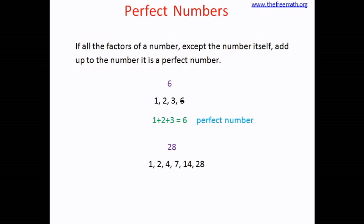1, 2, 4, 7, 14, and 28 itself. But we don't want to take 28 into consideration, so let's exclude that. And let's add all the other factors. So 1 plus 2 equals 3, 3 plus 4 equals 7, 7 plus 7 equals 14, and 14 plus 14 equals 28. So the sum is 28. 28 is a perfect number.